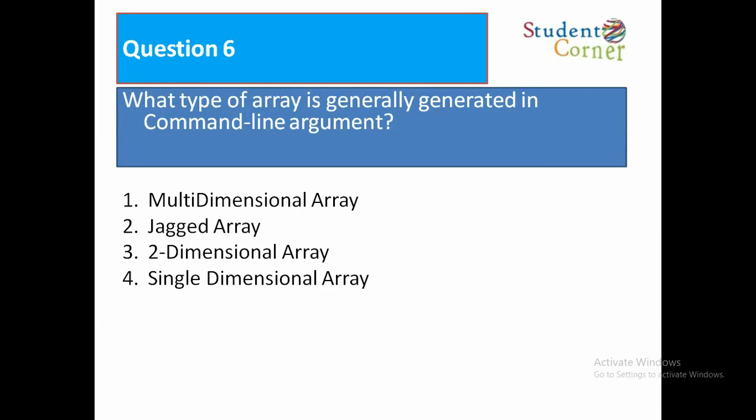Question number 6. What type of array is generally generated in command line argument? Option 1 multidimensional array, option 2 jagged array, option 3 two-dimensional array, option 4 single-dimensional array. The answer is jagged array.